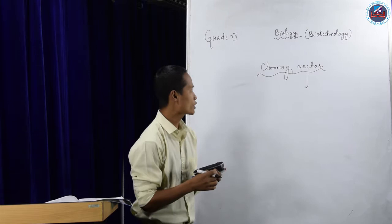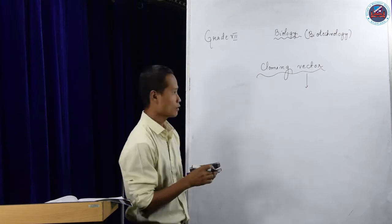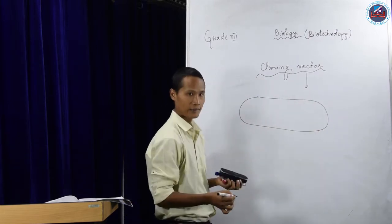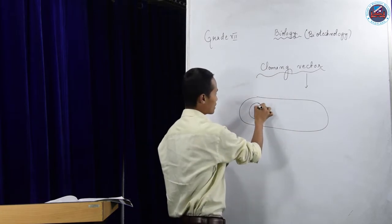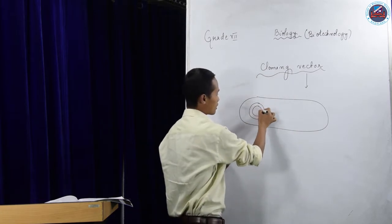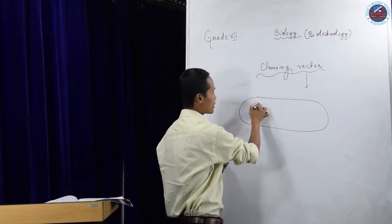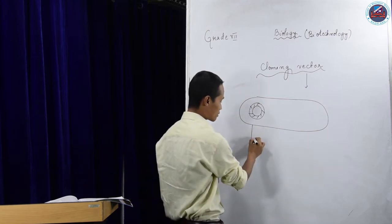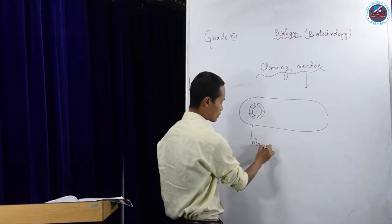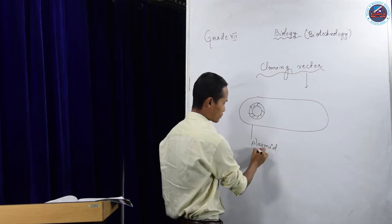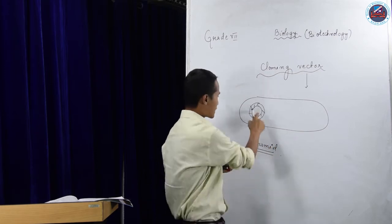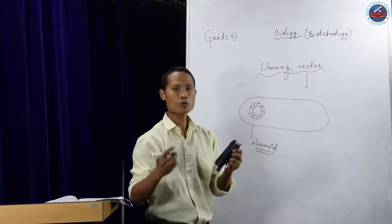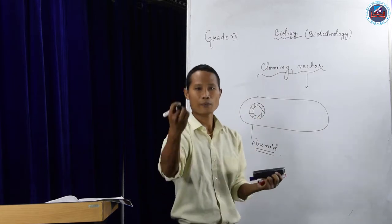Let me give you an example. There was a plasmid in a bacterial cell. This plasmid is an extra-chromosomal circular DNA. Please remember that a plasmid is an extra-chromosomal circular DNA which has the ability to replicate.